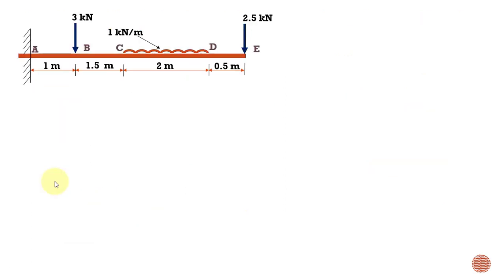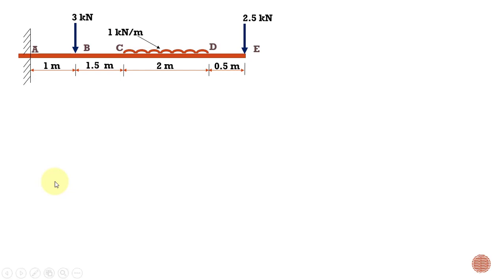Now let us draw the bending moment diagram. We need to find the bending moment values at the five points: A, B, C, D, and E. When calculating the bending moment about each point, we consider only those moments created by forces located on the right side of that point. For example, when calculating the bending moment at C, we consider only the moments from forces to the right of C.